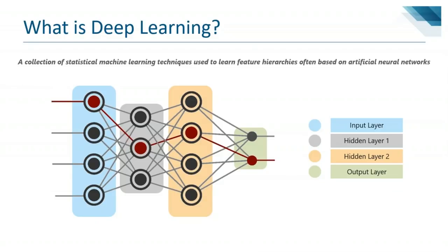Data flows from the input layer to the output layer through the hidden layers. What happens in the hidden layers depends on the activation function — we have ReLU (Rectified Linear Unit), linear, sigmoid, and others. For machine learning and deep learning, there are many in-depth tutorial videos on the Edureka channel; I'll leave a link in the description box below.